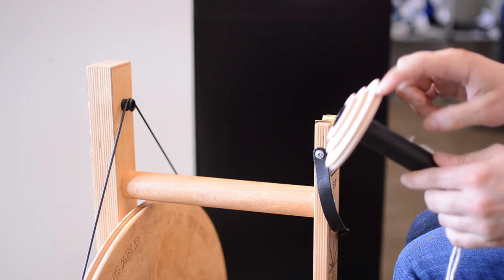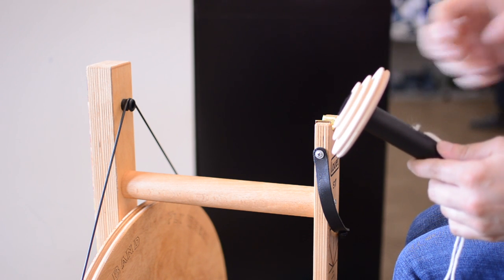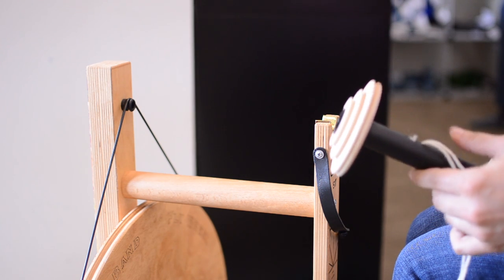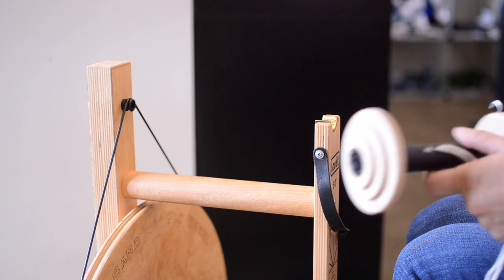Particularly if you leave it over the largest whorl for a long time, and then it's kind of that size, and you put it on the smallest whorl, it's going to slip. You're not going to get good action from your wheel.